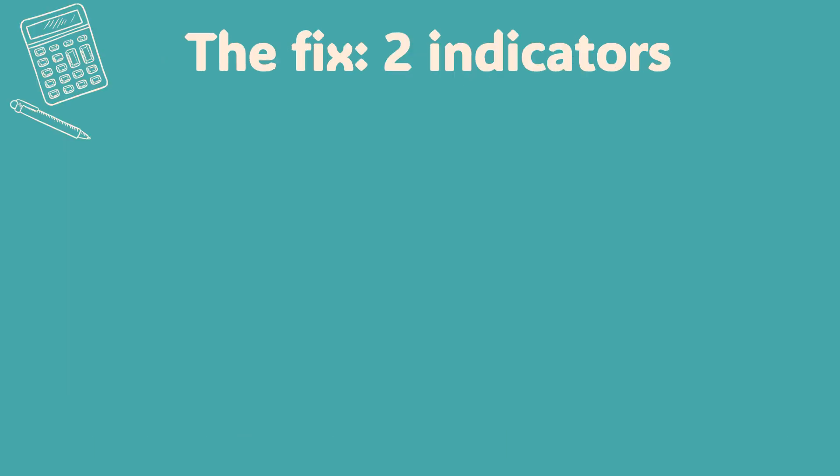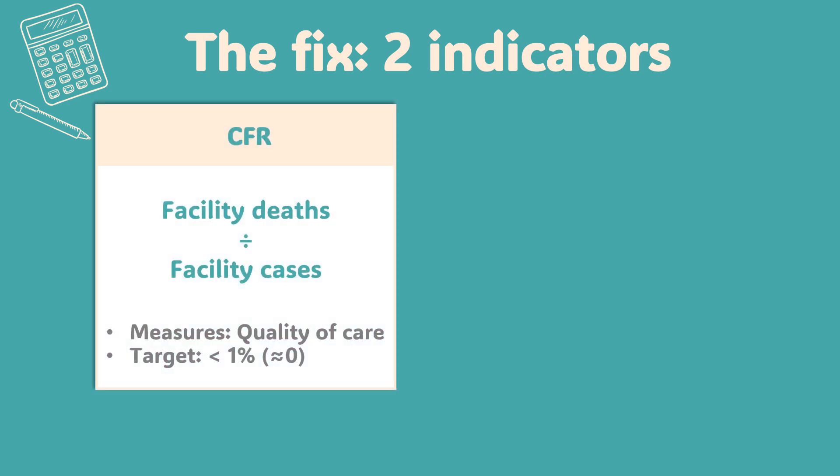So if mixing all the mortality data together is the problem, what's the fix? It's actually really simple and powerful. Instead of one broken indicator, you monitor two separate, crystal-clear indicators. Indicator number one: the real case fatality ratio, CFR. The formula is clean — you only count deaths that happened inside a health facility, and you divide that by the number of cases seen at health facilities. In a nutshell, this number primarily tells you one thing: how good is the quality of care for people who manage to get there?